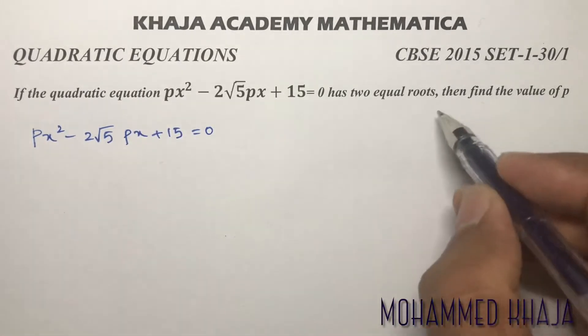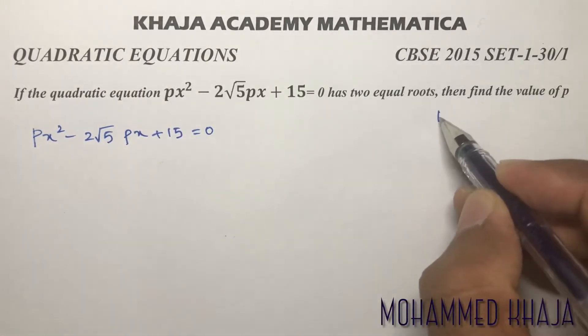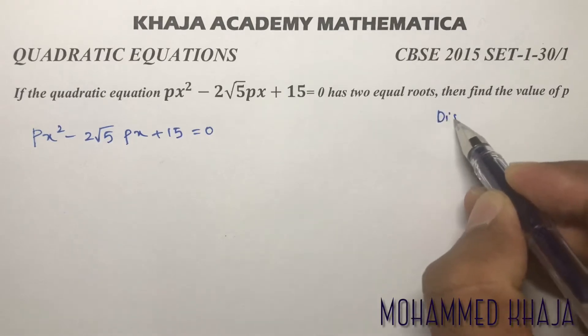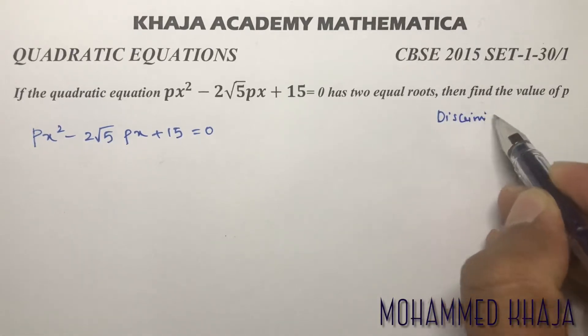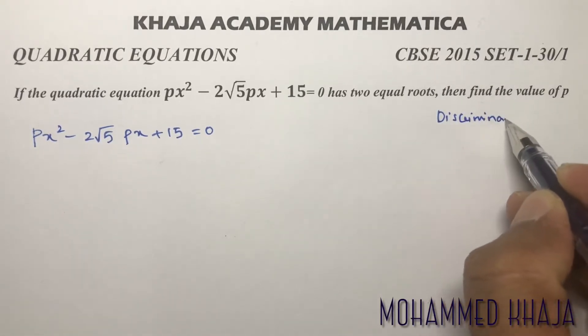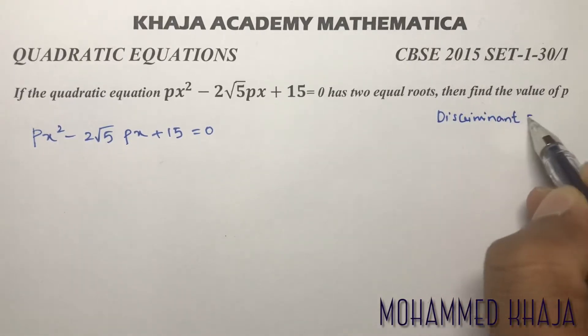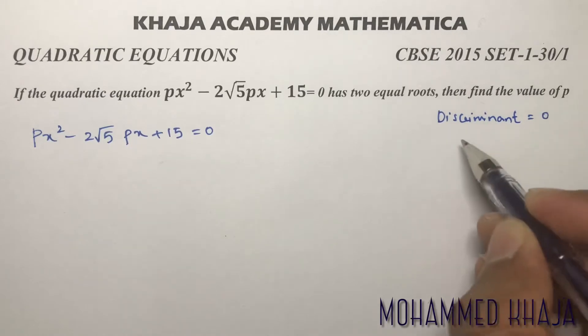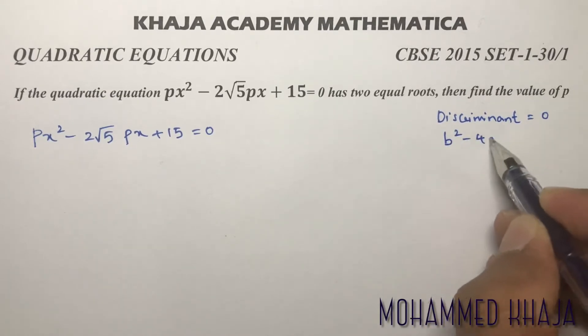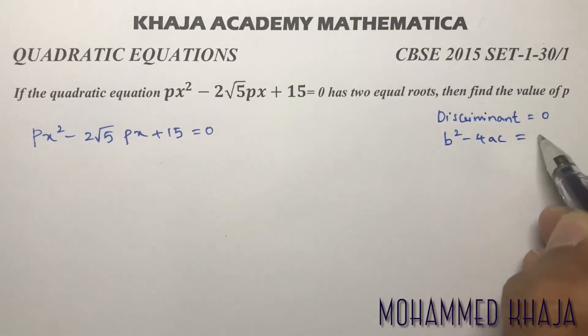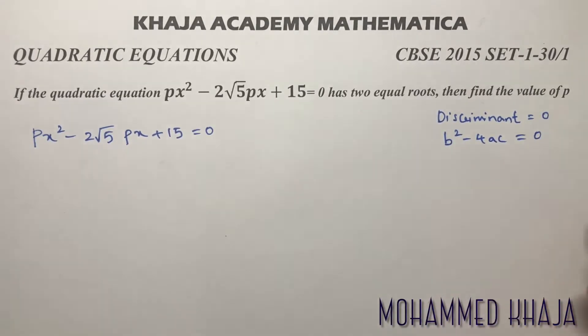If roots are equal, the discriminant will be 0. The discriminant value will be 0. Discriminant is b² minus 4ac equals 0.